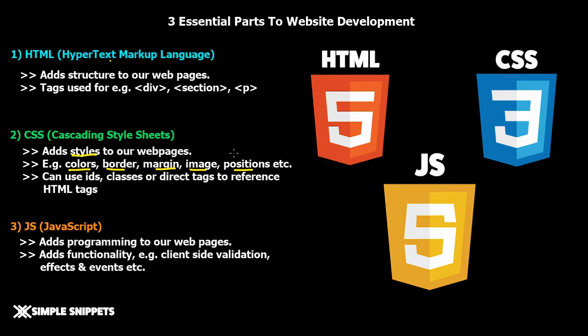Lastly, the third part is JavaScript, which adds programming to our web pages. Using HTML and CSS you can develop a complete website, but to add functionality — for example, when you click a button something should happen, or you have a form and want to perform validations so a user can't enter a number in a name field — those client-side functionalities are handled by JavaScript. Combining all three gives you a complete client-side website with structure, styles, and client-side functionality like validations, effects, and events.